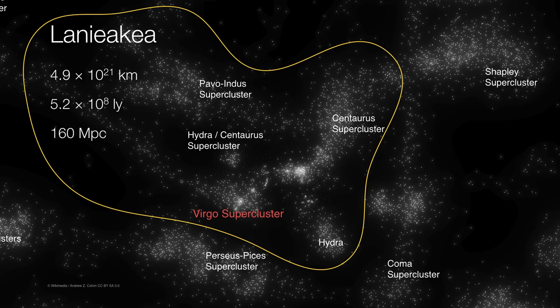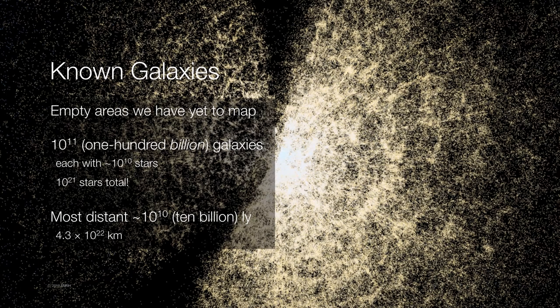So we thought the Virgo supercluster was, once upon a time, the biggest structure that we belong to. No — we in fact belong to a far larger structure, Laniakea. But all the galaxies that we see in the entire sky are as distant as 10 billion light years from Earth, or about 10 to the 22nd kilometers.